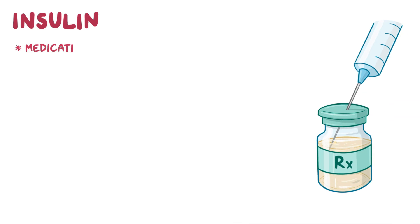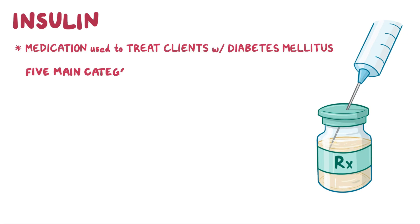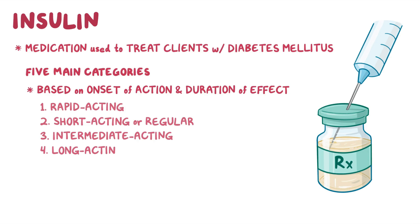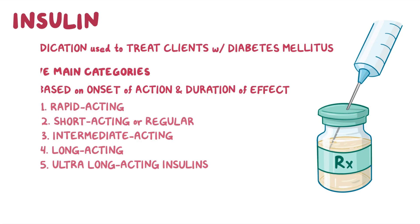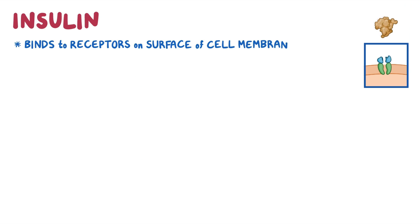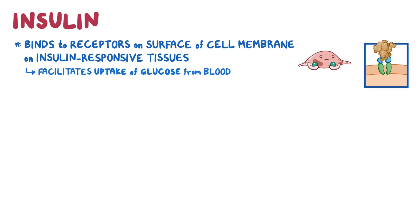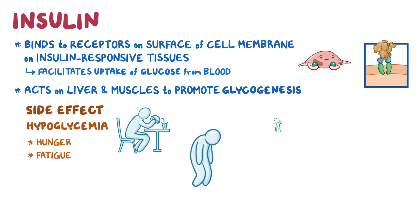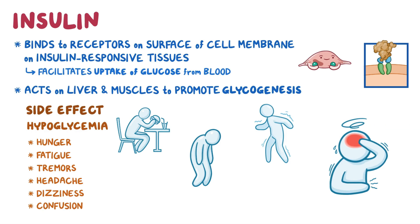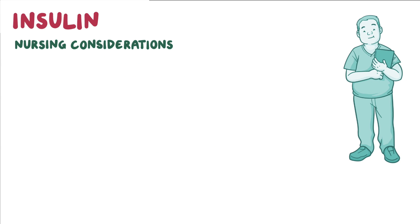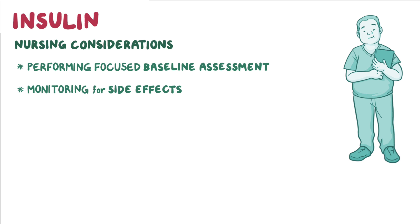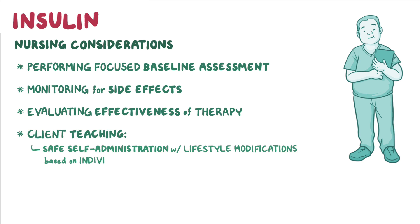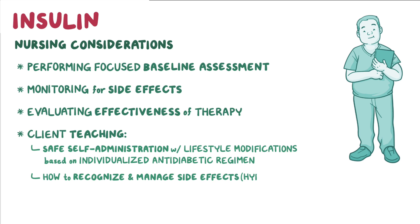As a recap: insulin is a medication used to treat clients with diabetes mellitus. There are five main categories of insulin based on onset and duration — rapid acting, short acting, intermediate acting, long acting, and ultra-long acting. Once administered, insulin binds to receptors on insulin-responsive tissues and facilitates glucose uptake from the blood, and promotes glycogenesis. The main side effect is hypoglycemia, presenting as hunger, fatigue, tremors, headache, dizziness, and confusion. Nursing considerations include a focused baseline assessment, monitoring for side effects, and evaluating therapy effectiveness. Client teaching focuses on safe self-administration, lifestyle modifications, and recognizing and managing hypoglycemia and hyperglycemia.